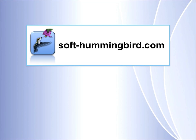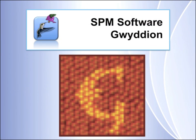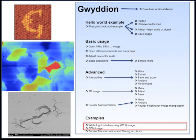Hello and welcome to the Soft Hummingbird Tutorials. This is a series of tutorials in which I will show you the program GVIDION. This video is an example of how to import a white light interferometry image, how to analyze a simple SEM image, and how to generate a pseudo 3D image from it.